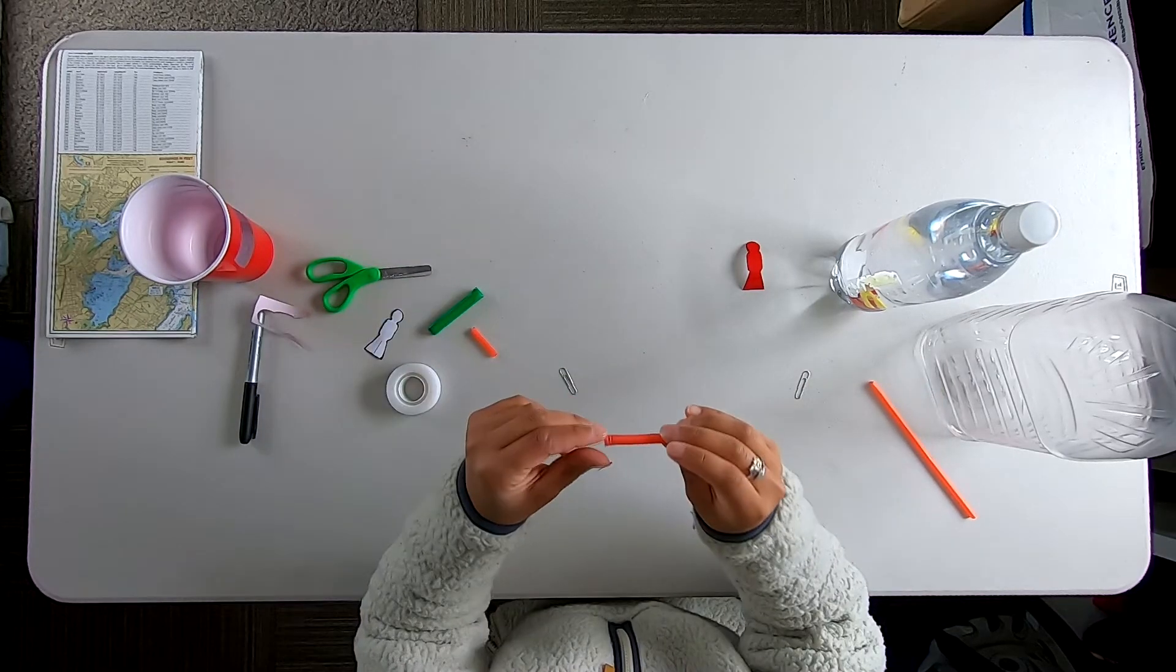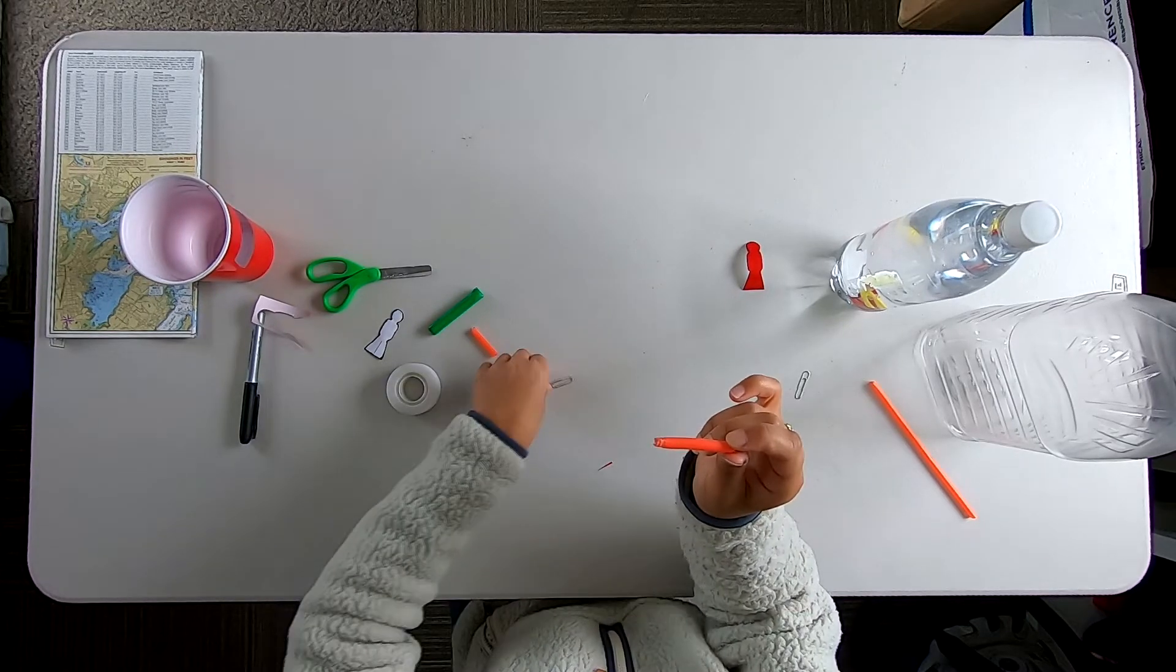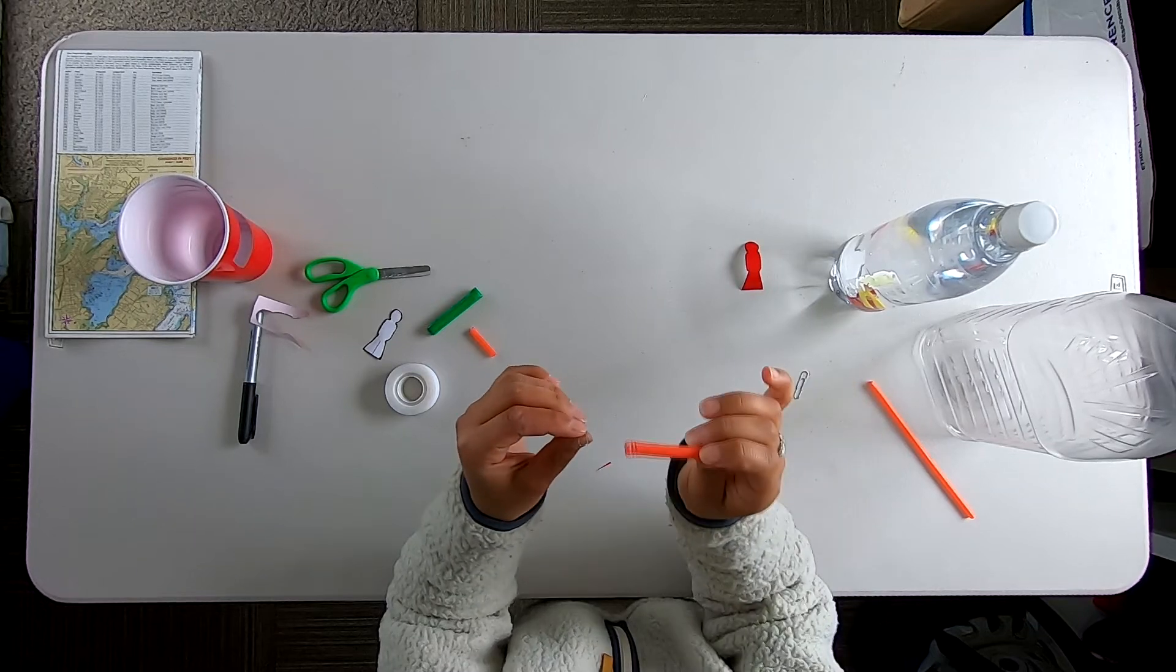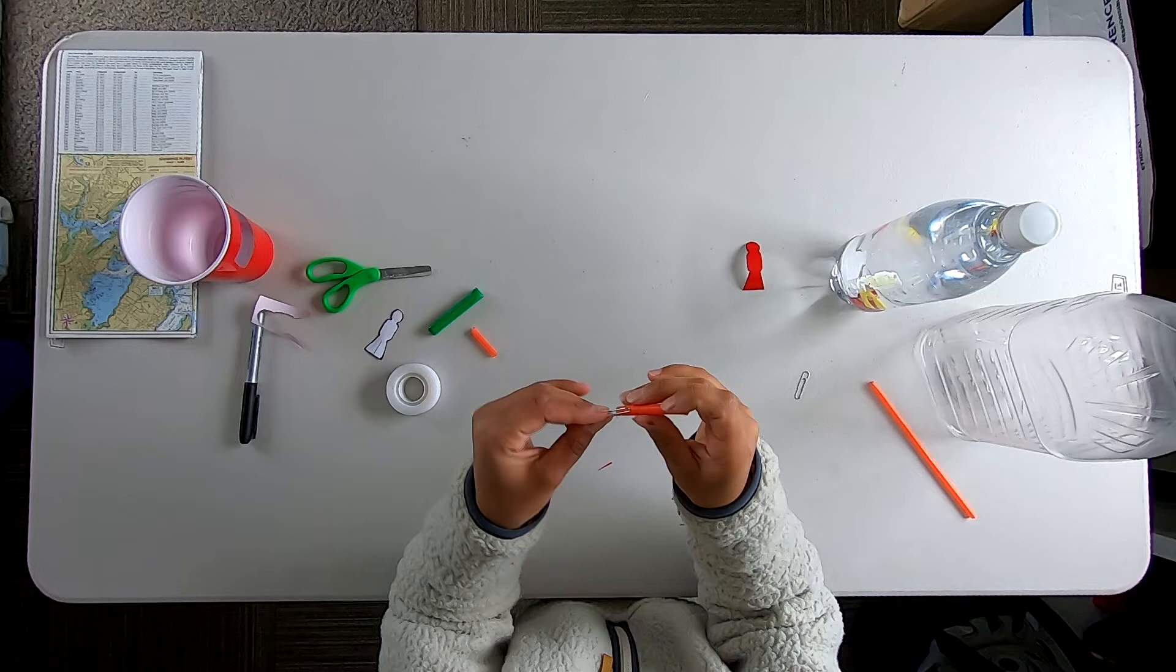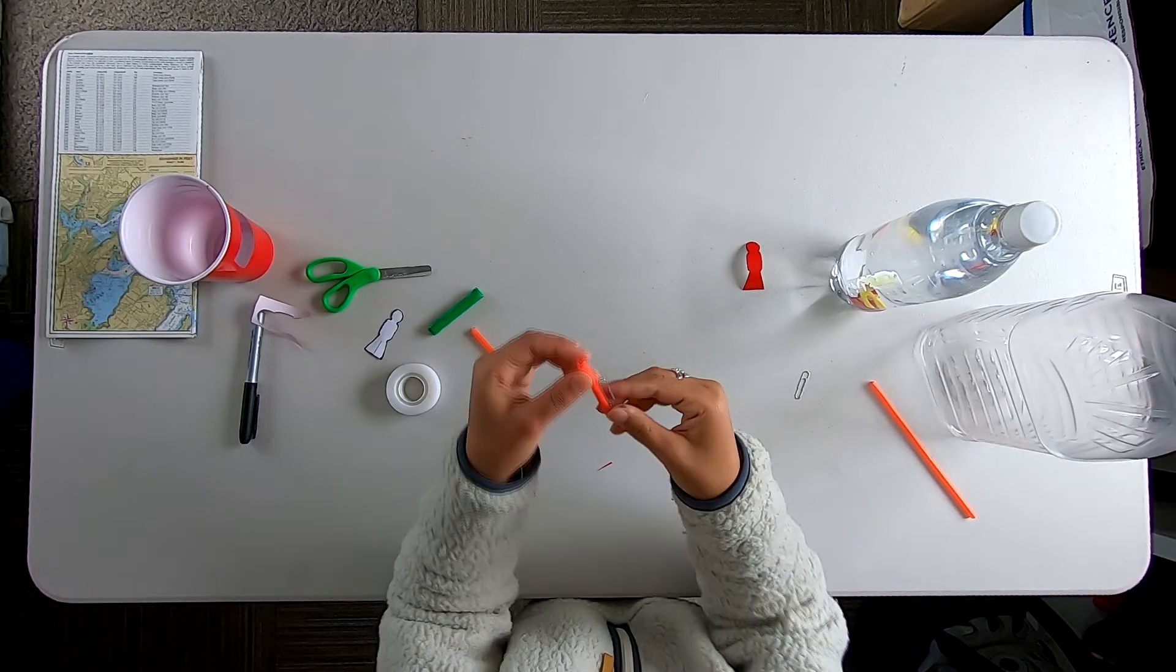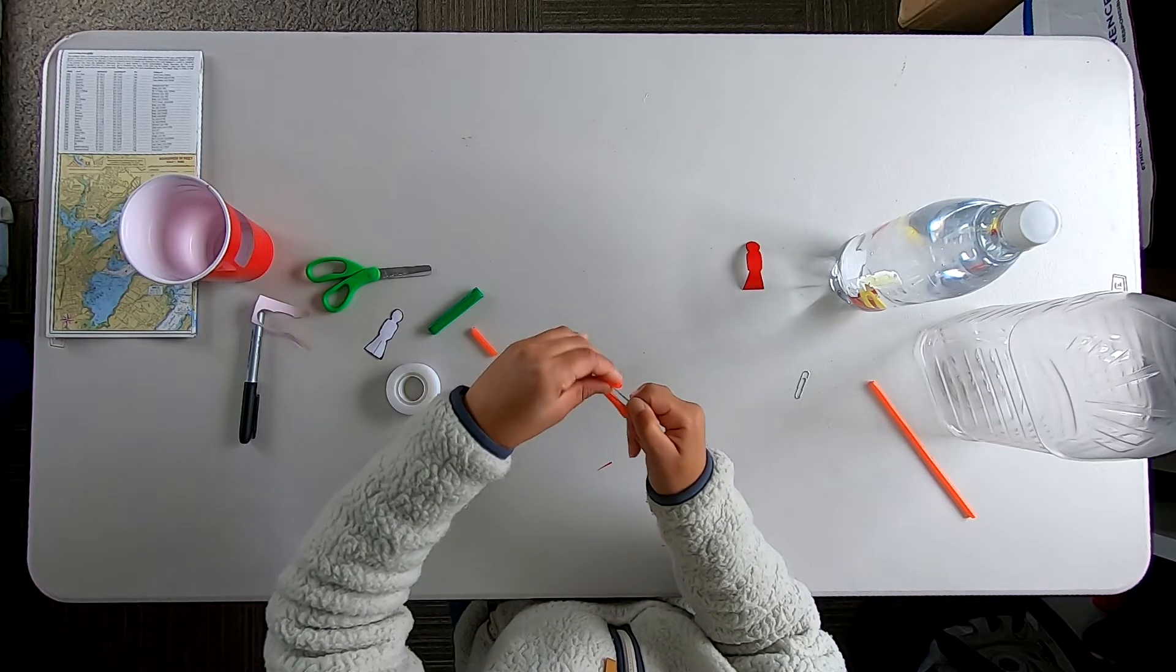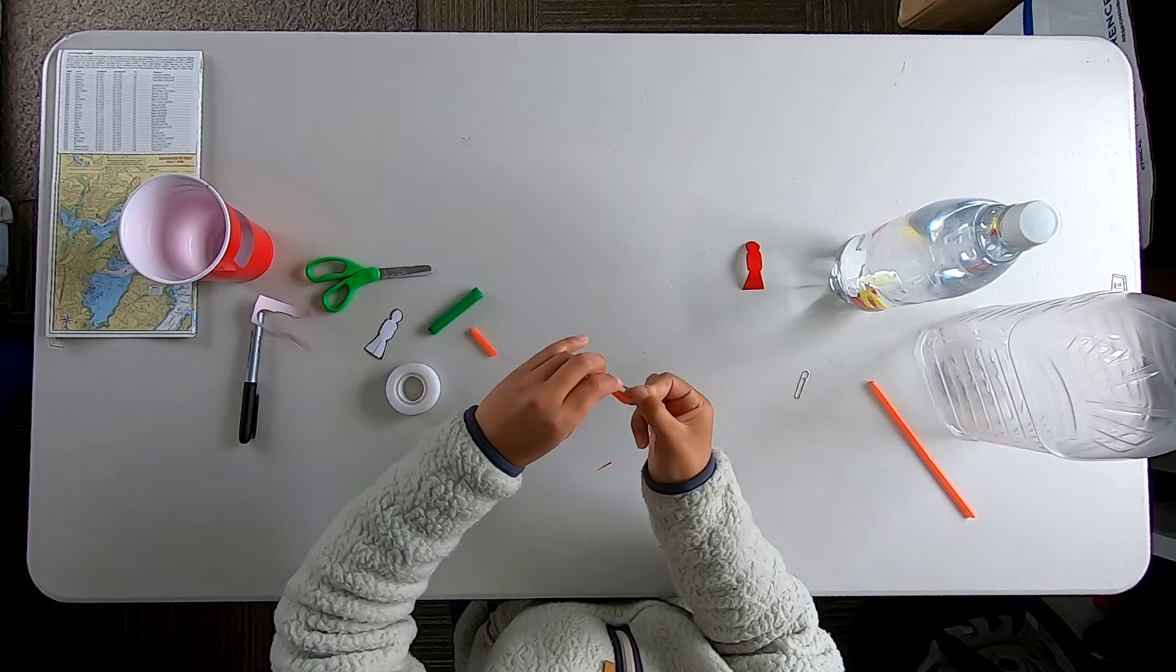Alright, so now I have the bendy part of the straw and my paper clip. Now I want to put the bendy part of the straw onto the paper clip. So I'm going to put one end on the part that sticks up of the paper clip, and then I'm going to fold over the straw and put the other end on the part of the paper clip that is sticking up.